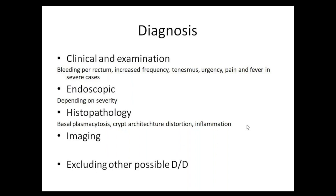Imaging in ulcerative colitis is primarily to rule out complications — the most important being toxic megacolon and peritonitis due to hollow viscus perforation. Toxic megacolon is defined as any segment of the large bowel with diameter more than 5.5 centimeters (some references say 6 cm), but according to the latest ECCO guidance, anything more than 5.5 centimeters qualifies as toxic megacolon.